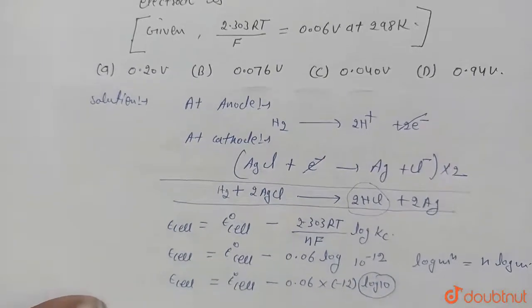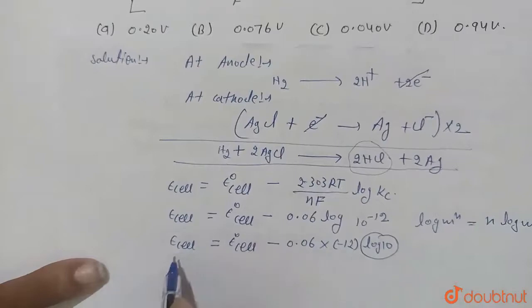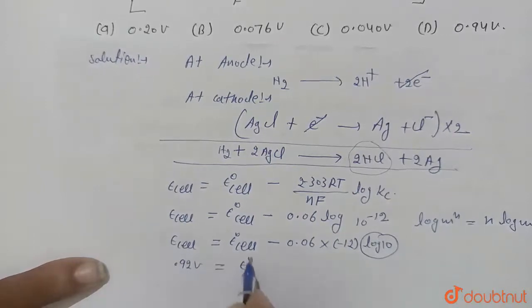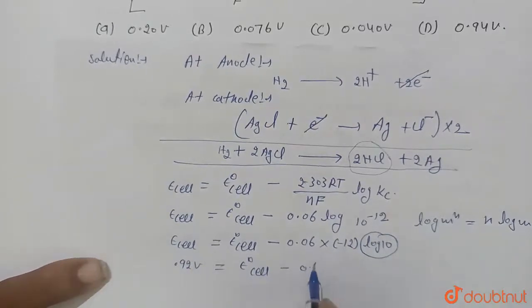Now we write the value of E cell will be 0.92 or equal to E naught cell minus 0.06 into minus 12. When we calculate this, then E naught cell will come out 0.20 volt.